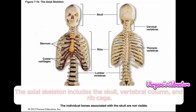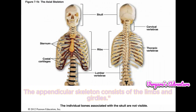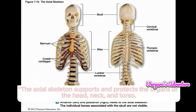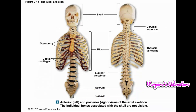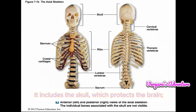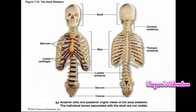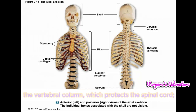The axial skeleton includes the skull, vertebral column, and ribcage. It supports and protects the organs of the head, neck, and torso. The skull protects the brain, the vertebral column protects the spinal cord, and the ribcage protects the heart and lungs.